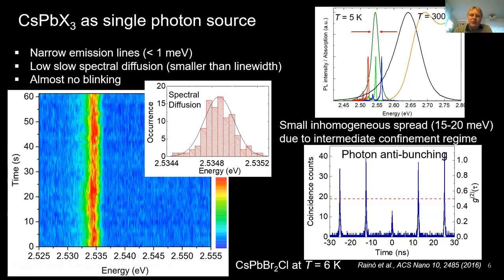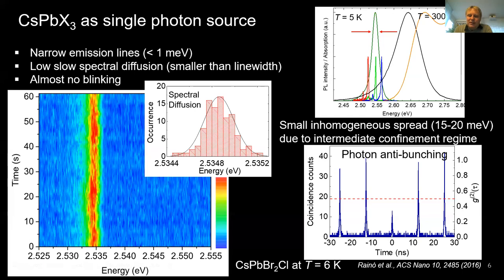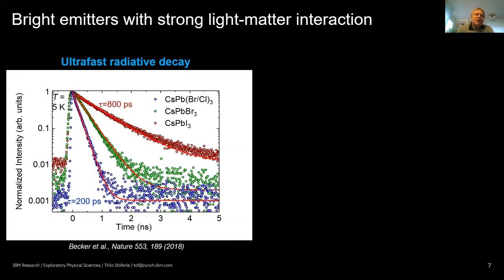For quantum optics experiments, you want to observe photon anti-bunching, which is also observed here. It differs between room temperature, where you see very little residual anti-bunching peak at zero time delay with biexcitons being quenched effectively, and low temperature, where you start to see some zero-time coincidence counts. Nevertheless, you can prove it is anti-bunching, confirming it is a quantum two-level system.